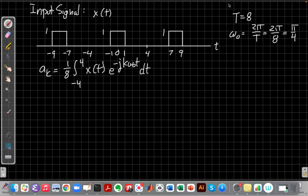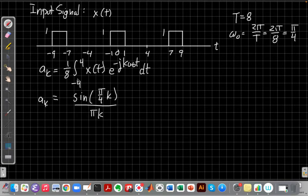If I jump ahead on this, the a sub k would be the sine of pi over 4k over pi k. So it's a sinc function, not surprising. Rectangle in one domain leads me to sinc in the other. If you want, you can pause the video here and practice your Fourier analysis skills, do this one yourself, and make sure you get the same answer I got. So there's my equation. When I'd solve this integral, I'd end up with the sine of pi over 4k over pi k. And if I plug in a couple of the values for that, just so we have the coefficients for later.